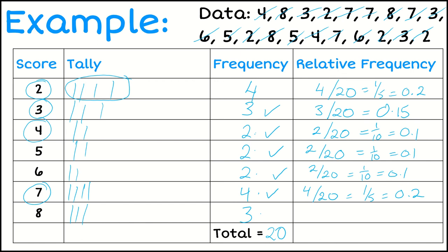And lastly, a score of 8. That's got a frequency of 3. So I'm going to write that as 3 over 20. And that simplifies to 0.15.